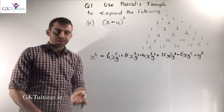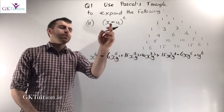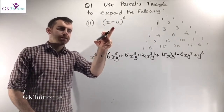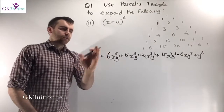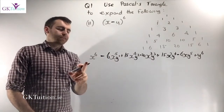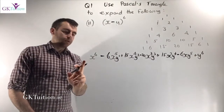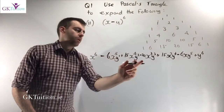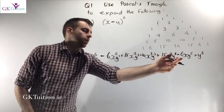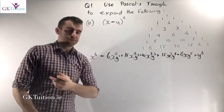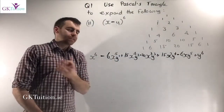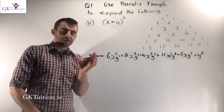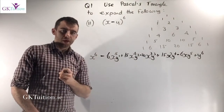Part 2 is basically the exact same, except instead of a plus we have a minus. So the first term is x to the power of 6, which is positive. Then minus, plus, minus, plus, minus, plus — alternating signs. You follow the exact same logic; it's just that when assigning the signs, you alternate them.